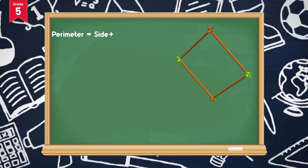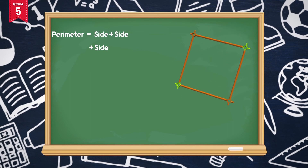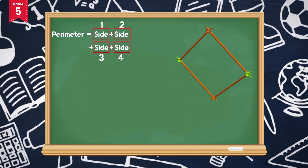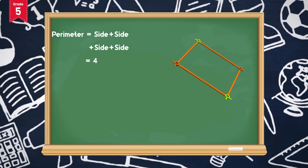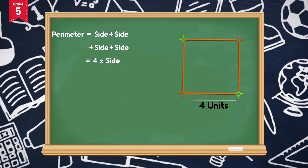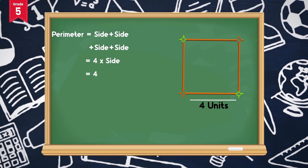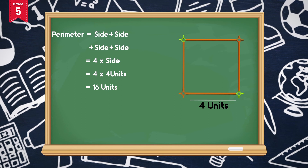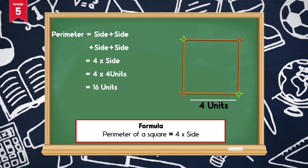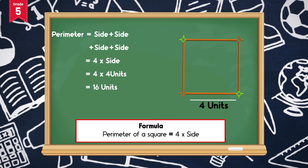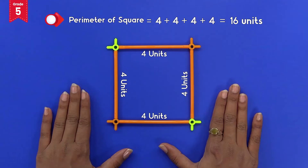Since the side is repeated four times, we can write it as 4 multiplied by side. Here the side is 4 units, so the perimeter will be 4 × 4 = 16 units. Therefore the formula for calculating the perimeter of a square is 4 × side. The perimeter obtained is the same as we obtained without using the formula.